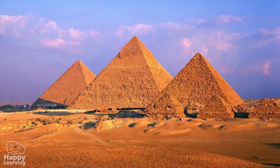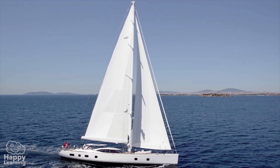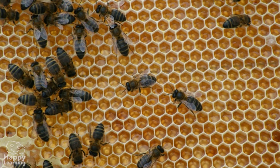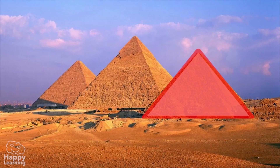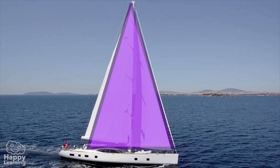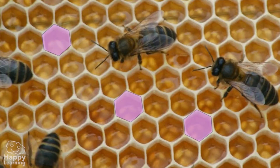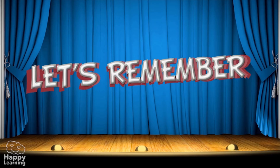Now let's find the polygons in these pictures. Look carefully — can you see any polygons? Good! As you can see, the pyramid, the boat sails, these buildings, and the panels of this hive where bees make their sweet honey are all polygons.